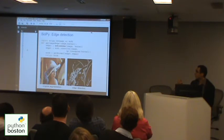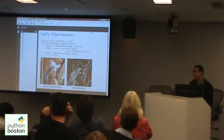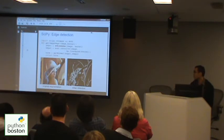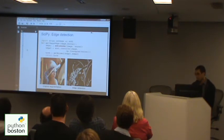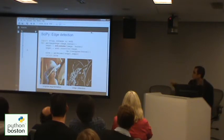Here is a second library, SciPy. I use it for edge detection. For those who are not familiar with image processing, edge detection is probably the most important feature in image processing. You can use it for segmentation, for image compression, and for image tracking. There are a lot of uses for this feature.